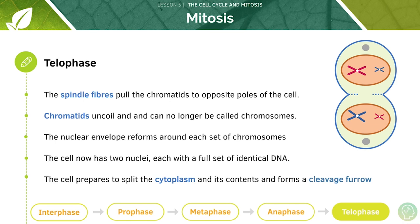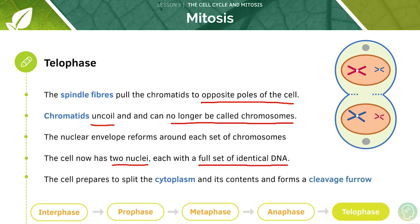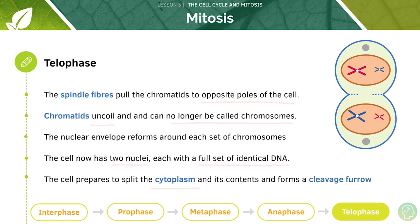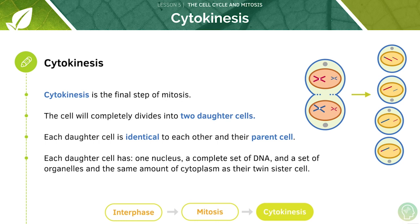During telophase, the spindle fibres pull the chromatids completely to the opposite poles of the cell. The chromatids begin to uncoil and can no longer be called chromosomes. The nuclear envelope will reform around each set of chromosomes, and the cell now has two nuclei each with a full set of identical DNA. The cell will then prepare to split the cytoplasm and its contents. During cytokinesis we finally finish mitosis — we get the complete division into two daughter cells, with each daughter cell being identical to each other and to their parent cell.